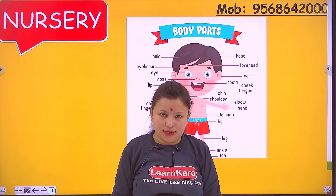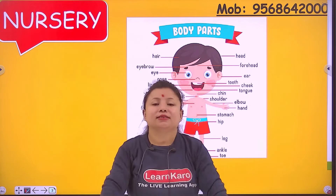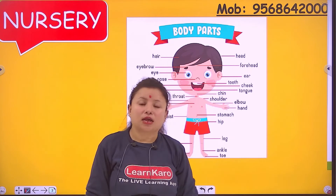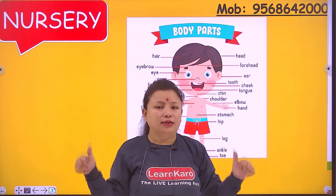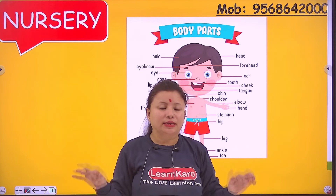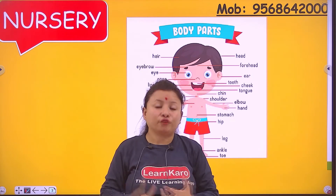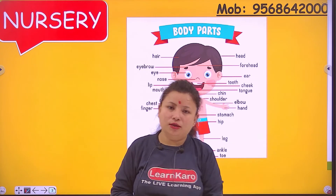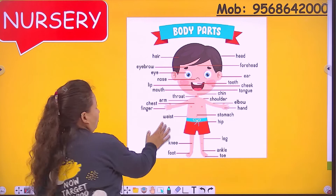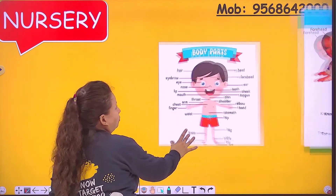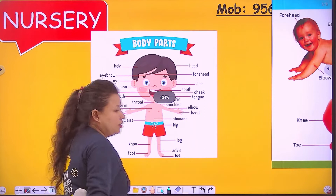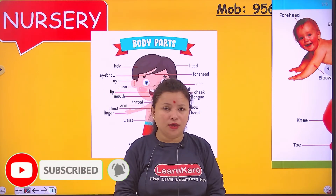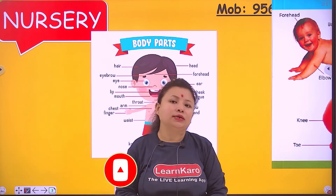Then leg, thighs, knees. Then the lower part — calf — and the last ones: heel, ankle, foot, toes. That's it. So now you have to learn the different parts of your body.